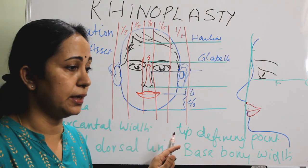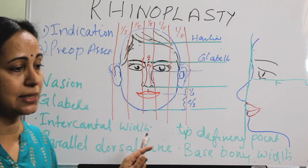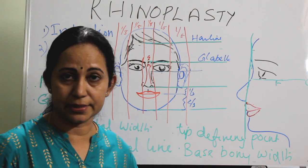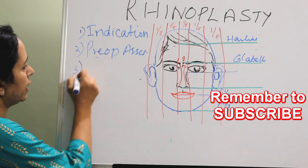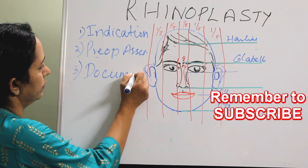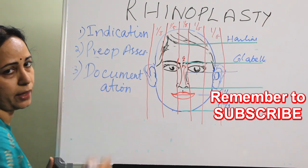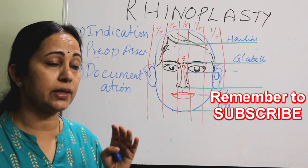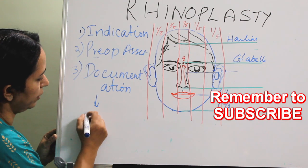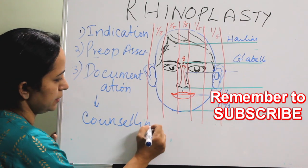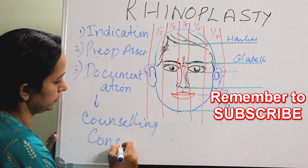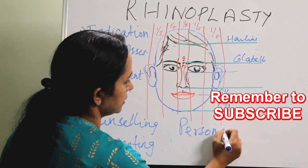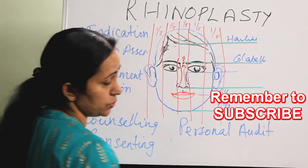All these points — radix and dorsum aesthetics, dorsum and tip assessment, tip aesthetic assessment, and base aesthetic assessment — should be kept in mind during the digital preoperative assessment for rhinoplasty. Accurate documentation is very important: you must document details of counselling and obtain a thorough informed consent. Personal audit of the patient, including their expectations, must also be documented.